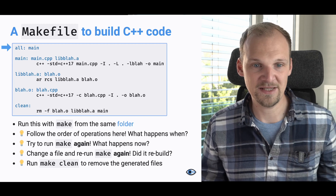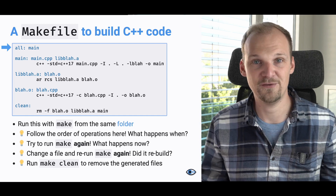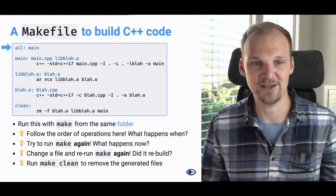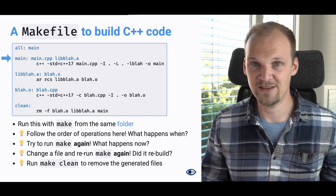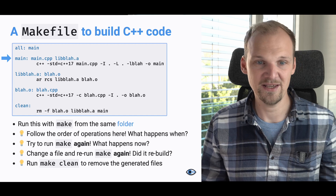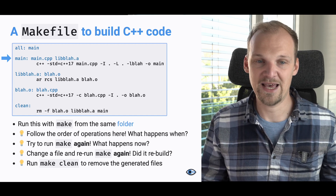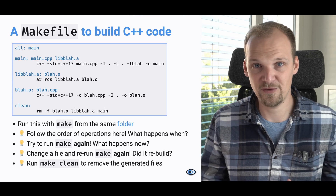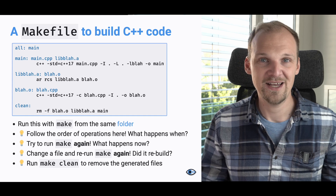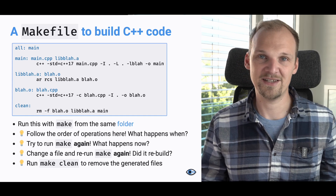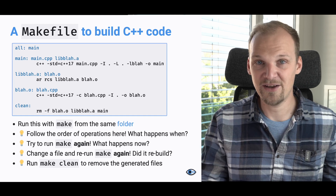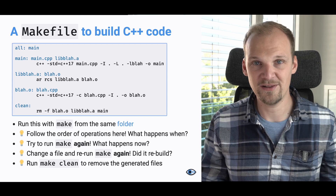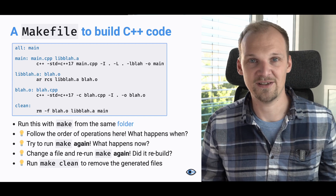The first target you see is 'all' — it's a default target that make always has, and if you just call make, it will try to build this target. In our case, the only dependency for the 'all' target is the 'main' target. If we follow up to 'main', we can see that it relies on main.cpp and libblah.a. So once we have those, we can actually build the main target using the command right under the main target block. And if you follow along the other targets, you can hopefully see that every single command is assigned to a certain target, and every target is a dependency to another target. This allows us to just call make in the folder with this file and our CPP files, and that should generate our binaries.